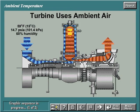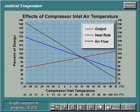The gas turbine is an ambient air-breathing machine. Therefore, its performance will be changed by anything affecting the mass flow of the inlet air to the compressor, such as changes in temperature, barometric pressure, and humidity. The temperature of the air entering the compressor inlet affects output, heat rate, and air flow. These effects are illustrated in this graph.